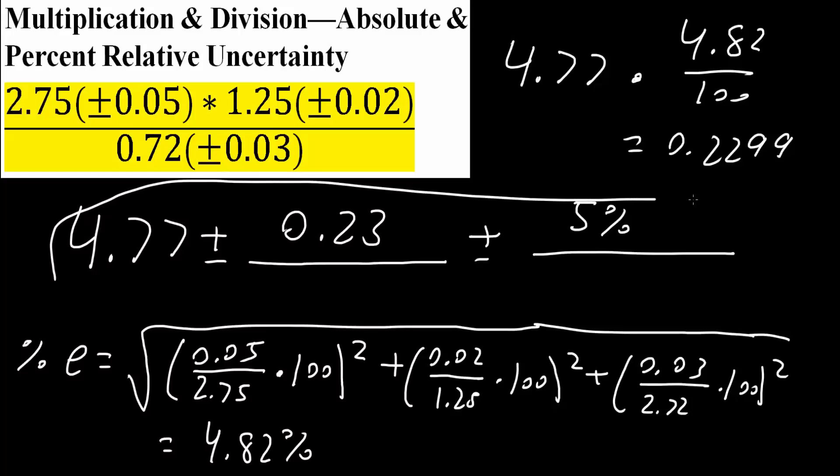This right here is the final answer, where 0.23 is our absolute uncertainty and 5% is our percent relative uncertainty. And that's all we need to do for problems that exclusively deal with multiplication and division.